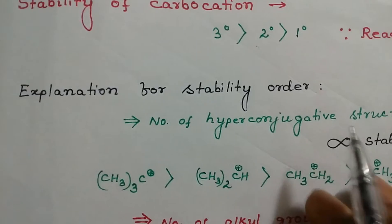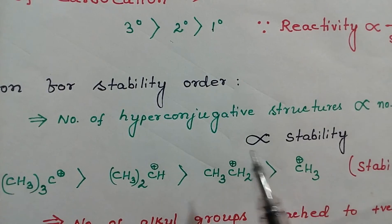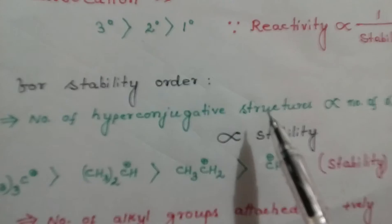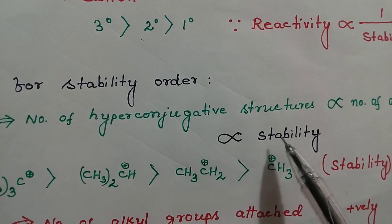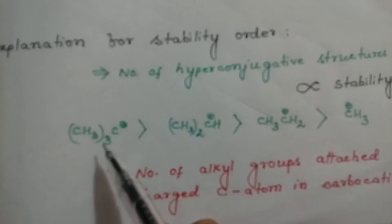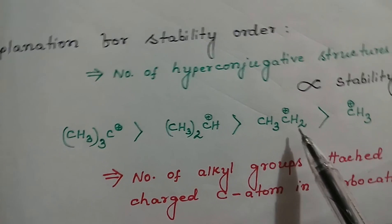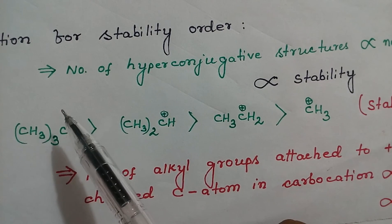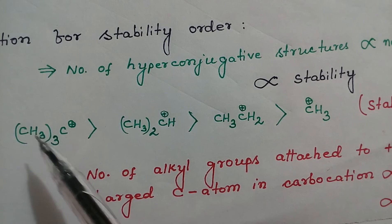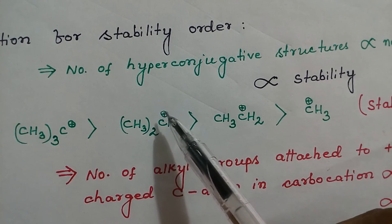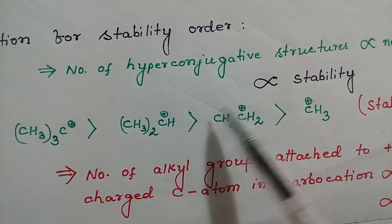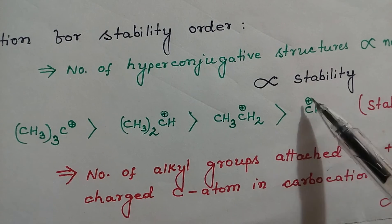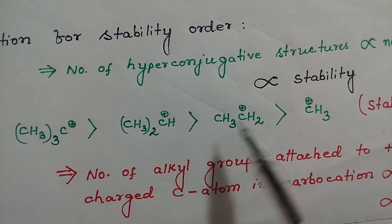The stability of a carbocation depends on the number of alpha hydrogens. If the number of alpha hydrogens is more, then you can draw more hyperconjugative structures, and more hyperconjugative structures means more stability. Tertiary carbocation is more stable because it has 9 alpha hydrogens, so 9 hyperconjugative structures can be drawn. Secondary carbocation has 6 alpha hydrogens, so 6 hyperconjugative structures. Primary carbocation has 3 alpha hydrogens, so 3 hyperconjugative structures. Methyl carbocation has no alpha hydrogens, so no hyperconjugation. This gives the decreasing order of stability of carbocations.